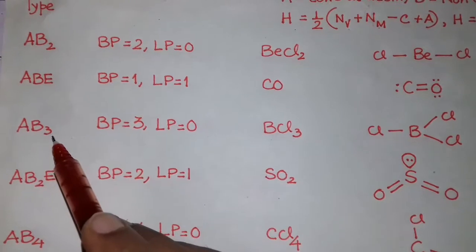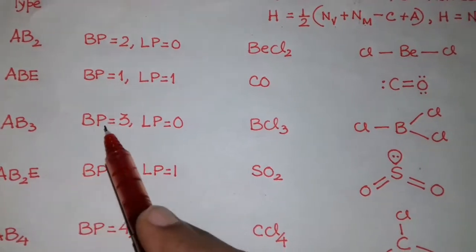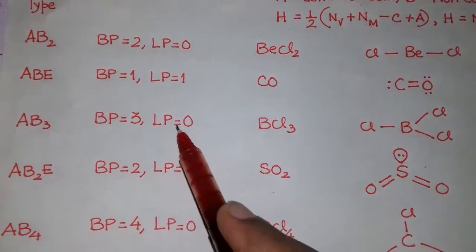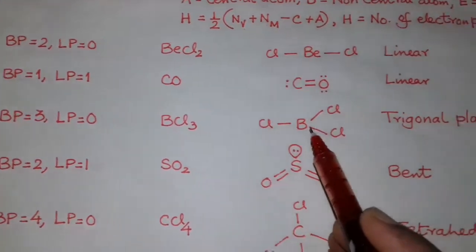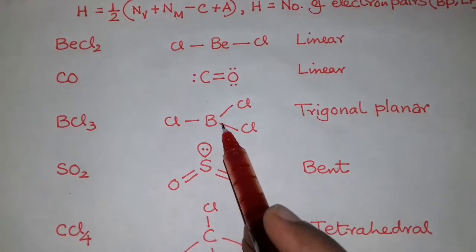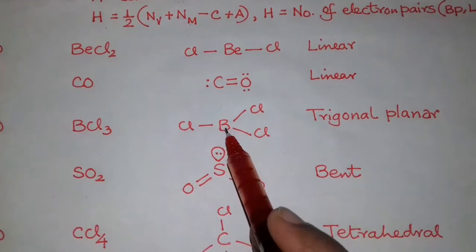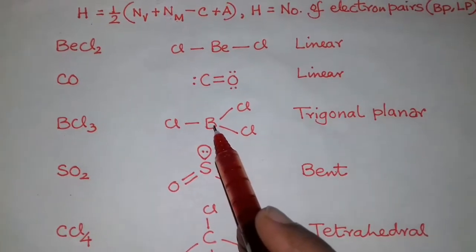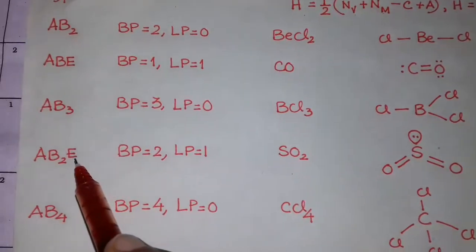Next type is AB3, in which H equals 3. Bond pair is 3 and lone pair is 0. For BCl3, the shape is normal trigonal planar, in which the central atom boron has no lone pair.